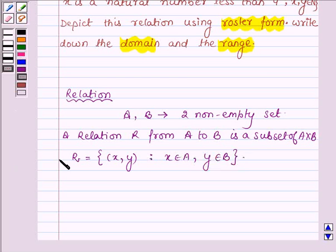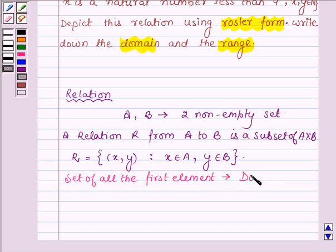Now the set of all the first elements of the ordered pair X and Y is called the domain and set of all the second element of the ordered pair is called the range.